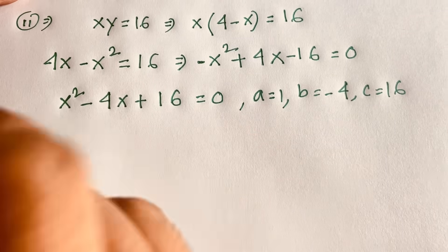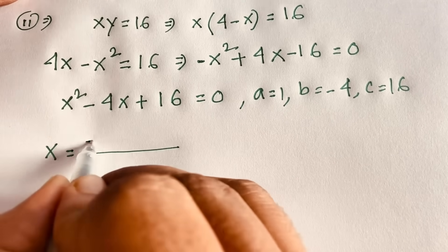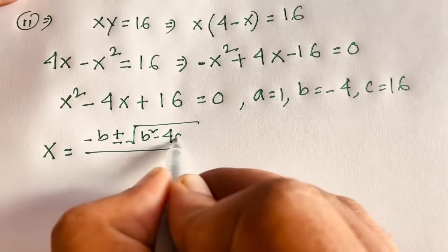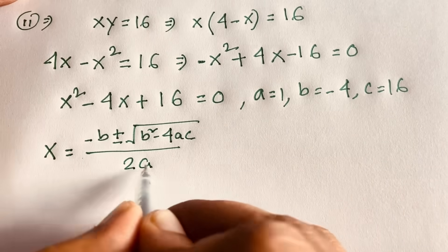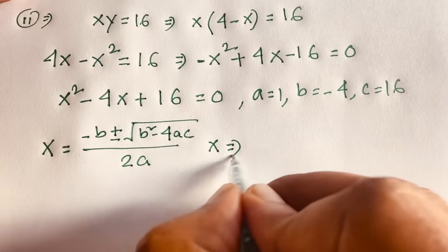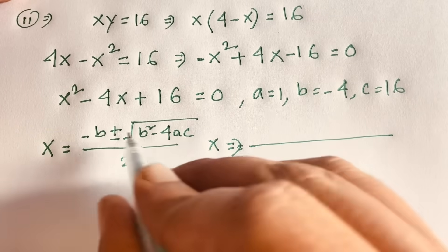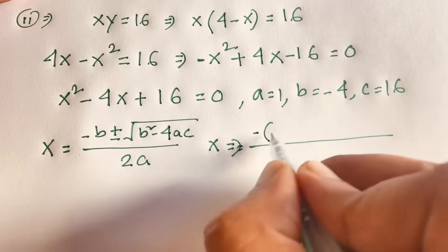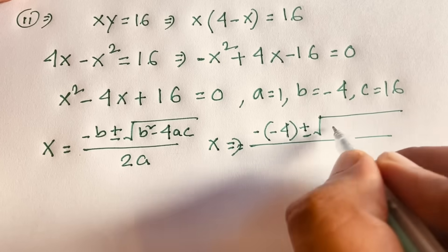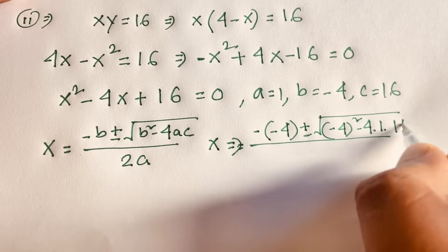To find x I apply the quadratic formula: x equals negative b plus or minus the square root of b squared minus 4ac, all over 2a. Substituting: negative of negative 4, plus or minus the square root of (negative 4) squared minus 4 times 1 times 16, over 2 times 1.